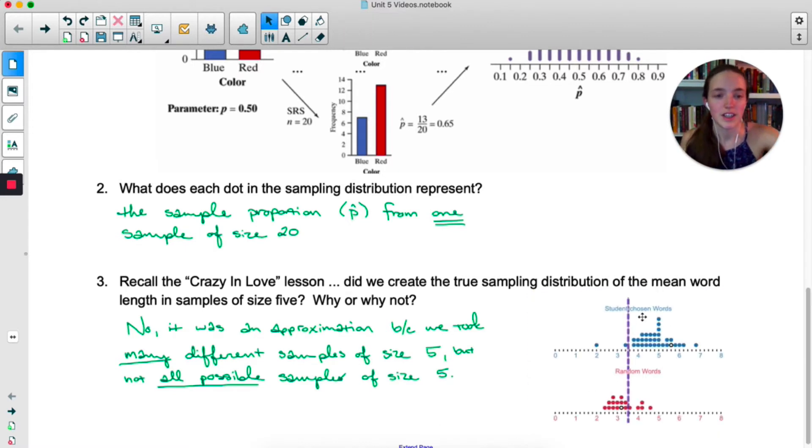So the answer was no, it was not the true sampling distribution. It was an approximation because we took many different samples of size five, but not all samples of size five. So if you recall, we did this twice. We did it once where you were just choosing words. We did it once where you were actually randomly selecting words. Each dot of the dot plot represents a different sample. In this case, it was x bar. It was a mean length of a word. It wasn't a p hat, but same idea. Each dot represents an individual sample.